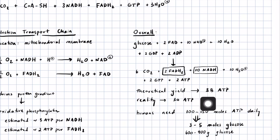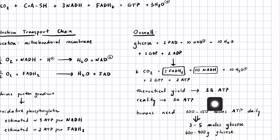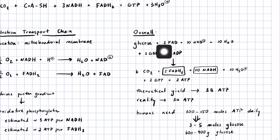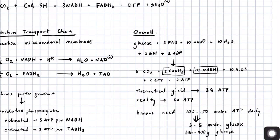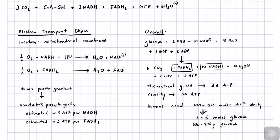With this in mind, we can start to have an idea of how much glucose a human needs to survive every day. You need about 100 to 150 moles of ATP daily — that's the average human. So if we get 30 molecules of ATP from one molecule of glucose, that means you need 3 to 5 moles of glucose to survive, which is anywhere from 600 to 900 grams of glucose — almost a whole kilogram. That's why we're always hungry.